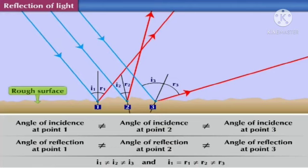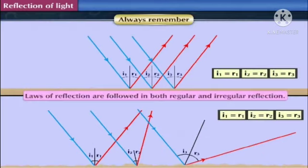We can conclude that for rough surfaces, the angles vary at different points. Always remember, first point: laws of reflection are followed in both regular and irregular reflection.